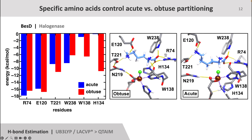Next, if we look at all the hydrogen bonds between the halogenase BesD and its substrate, we can see a similar trend. We can see the loss of several strong hydrogen bonds when switching to the non-native acute angles, such as the loss of the hydrogen bonds between histidine-134 and tryptophan-138. If we take a closer look at these interactions, we can see how the hydrogen bond between histidine-134 and the substrate breaks in the non-native acute conformation. In the first structure showing the obtuse conformation, we can see how the hydrogen bond is intact. However, in the acute conformation, we can see that the hydrogen bond is broken, freeing the substrate lysine to move to a more acute angle. Interestingly, this finding also agrees with an experimental study that shows that by mutating histidine-134 to an alanine, researchers were able to get a majority hydroxylated product in the halogenase BesD.